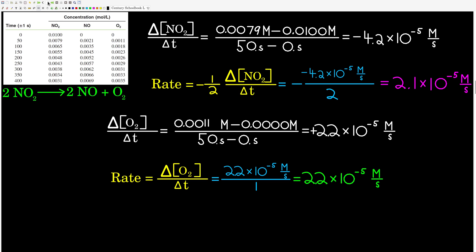It's really just stoichiometry. So let's look at some specific numbers. This is data for the decomposition of nitrogen dioxide. The first column is time elapsed, and the other columns are concentrations of the reactant and two products. At time zero we start with 0.0100 molar nitrogen dioxide and zero moles per liter of the two products. After 50 seconds we have this much nitrogen dioxide remaining, and we've produced these amounts of nitrogen monoxide and oxygen, and so on at 100 seconds, 150 seconds, and beyond.